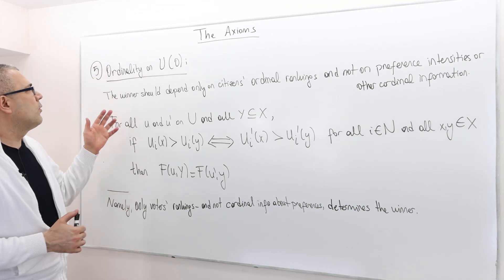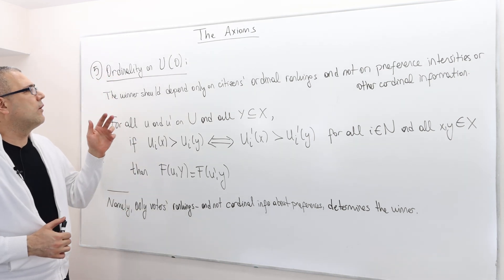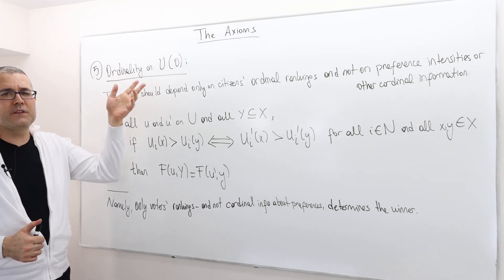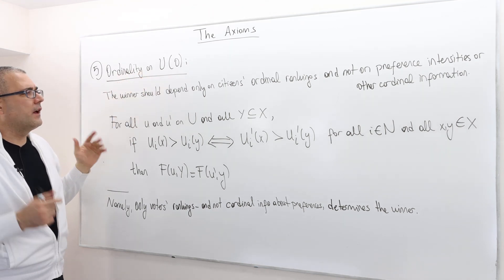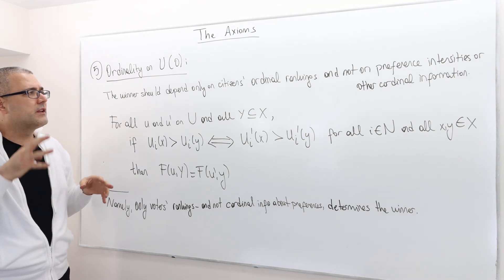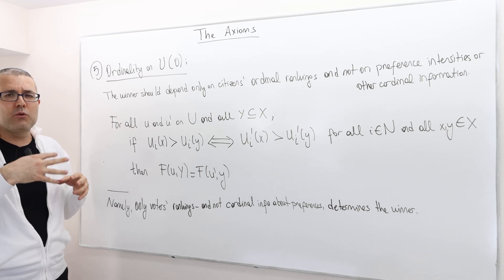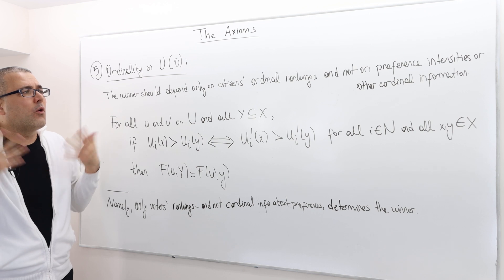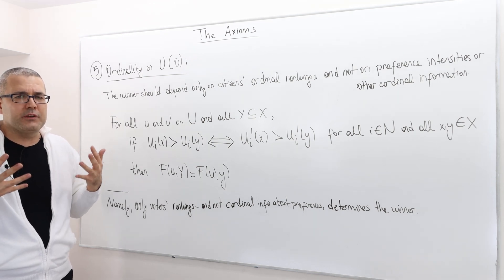Here's our fifth axiom, it's called ordinality on the preference domain U, and I'm going to refer to this axiom as O. The basic idea is the following: the winner should depend only on the citizen's ordinal rankings, ordinal preferences, and not on preference intensities or other cardinal information.